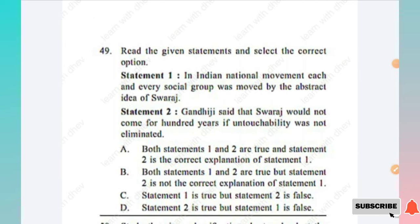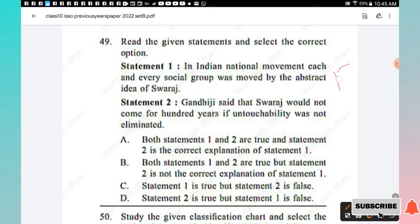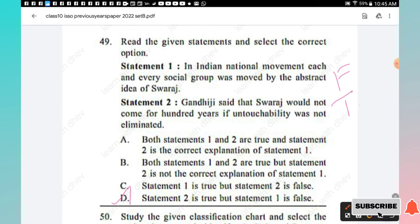Question 49: Statement 1 — In the Indian national movement, each and every social group was moved by the abstract idea of Swaraj. Statement 2 — Gandhi said that Swaraj would not come for 100 years if untouchability was not eliminated. Statement 1 is false and Statement 2 is true.